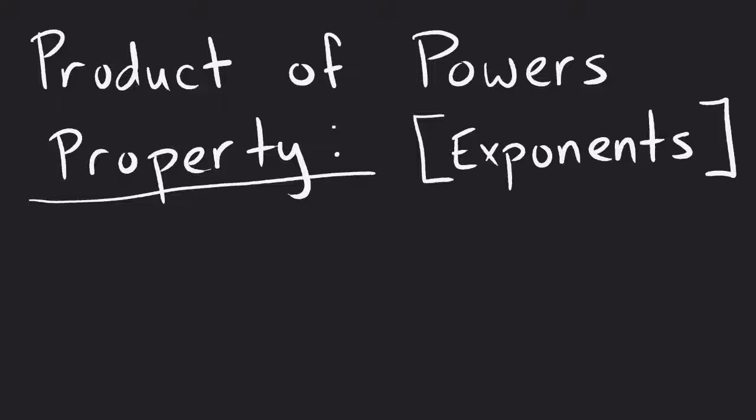Product of powers property applies to exponents and basically what this one says is now we're going to have powers that are going to be multiplied together. So we're taking the multiplication of things that are already raised to a power. So how does that work?